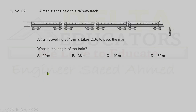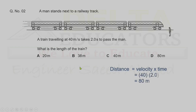Question 2. A man stands next to a railway track. A train traveling at 40 meters per second takes 2 seconds to pass the man. What is the length of the train? The length equals the total distance covered, using distance = velocity × time: 40 × 2 = 80 meters. Correct option is D.